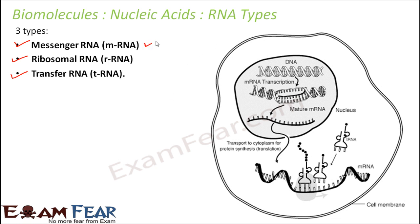When you talk about messenger RNA, the word messenger means somebody who conveys information from one place to another. The job of DNA is to store the genetic information. So in this double strand of DNA, all the genetic information is stored. It is stored in the form of the sequence of the bases — that is, in the form of codons.